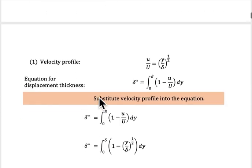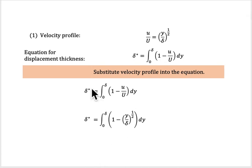So for example, to solve velocity profile u over U equals y over delta by the power of 1 over 2, the question asks you to find what is the ratio between delta star and delta. So what you need to do is,